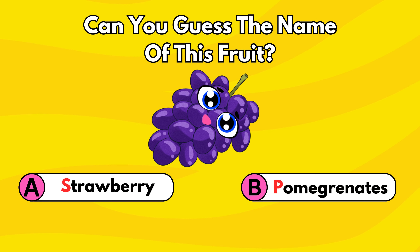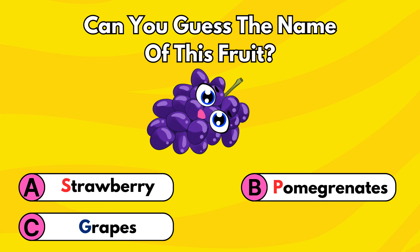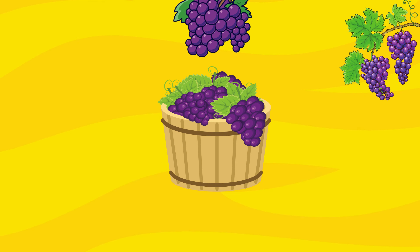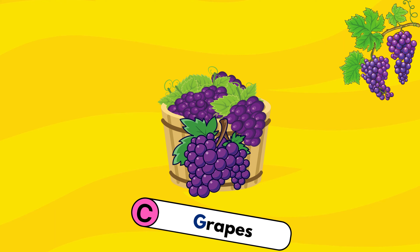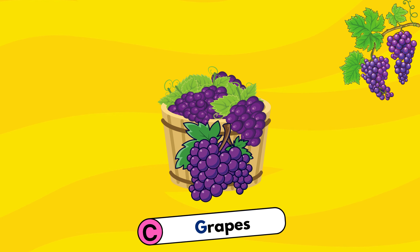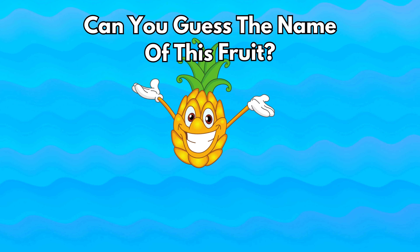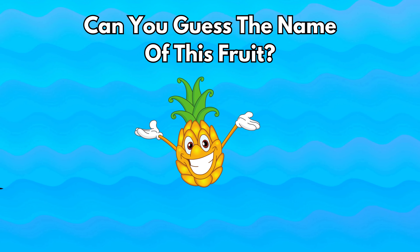Can you guess the name of this fruit? Is it A strawberry, B pomegranate, C grapes, or D pear? That's right, it's C grapes! Great job!